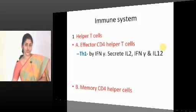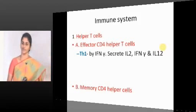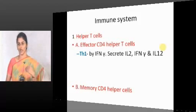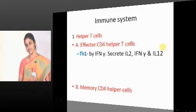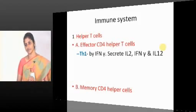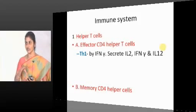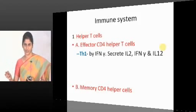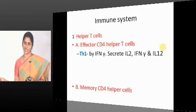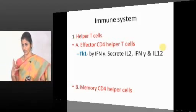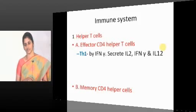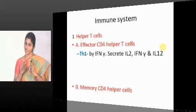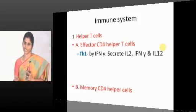Coming to TH2: TH2 will take care of type 1 hypersensitivity reaction, which is anaphylaxis. Anaphylaxis is mediated by IgE antibody. There is some cytokine to drive the differentiation towards IgE-producing plasma cells — it is IL-4. Which cells predominate in type 1 hypersensitivity reaction? Eosinophils. So there should be some cytokine for their growth and recruitment — it is IL-5.